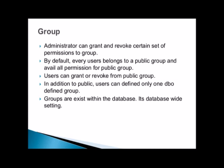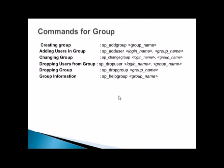Now let's talk about groups. An administrator can grant and revoke a certain set of permissions to groups. By default, every user belongs to a group called 'public' and receives all permissions given to this group. Users can grant or revoke from the public group. In addition to public, users can define only one DBO-defined group. Groups exist within the database — it is a database-wide setting.